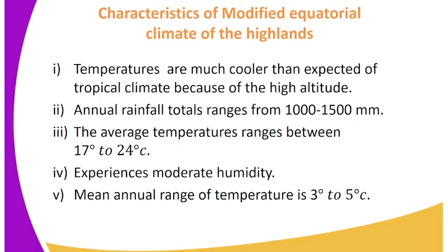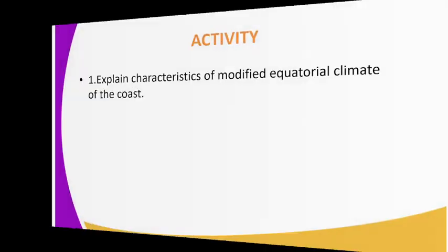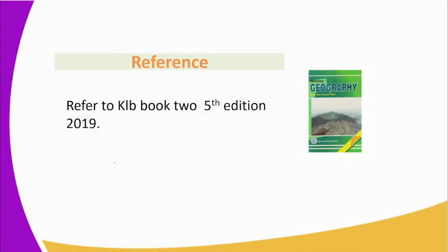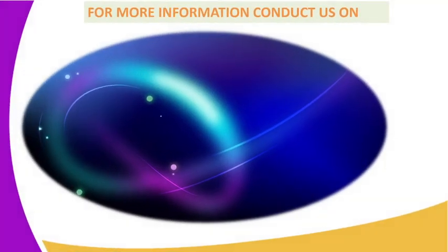That is the end of our lesson today. For more revision purposes, explain the characteristics of modified equatorial climate of the coast. For reference, you can have a look at KLB Book 2, 5th edition of 2019.